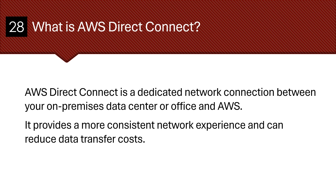What is AWS Direct Connect? AWS Direct Connect is a dedicated network connection between your on-premises data center or office and AWS. It provides a more consistent network experience and can reduce data transfer costs.